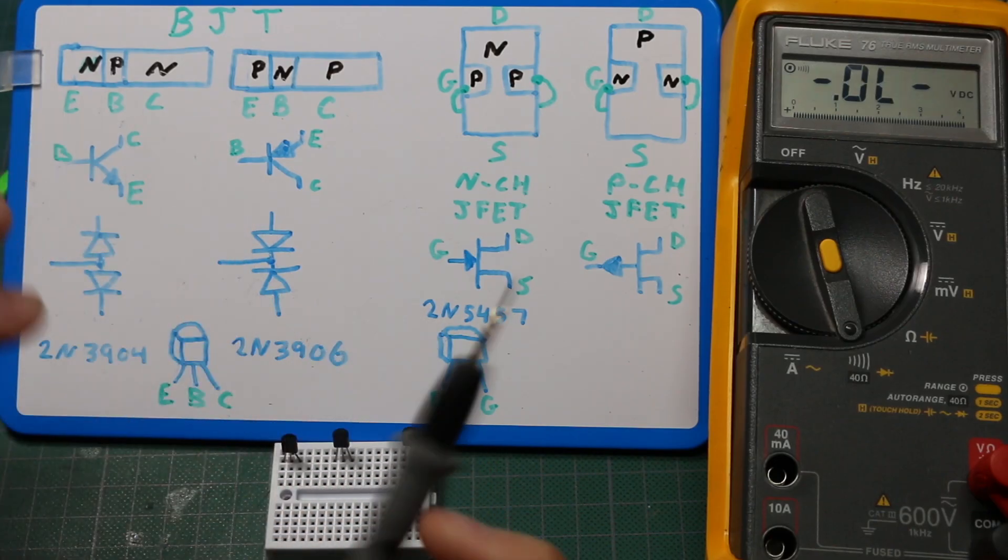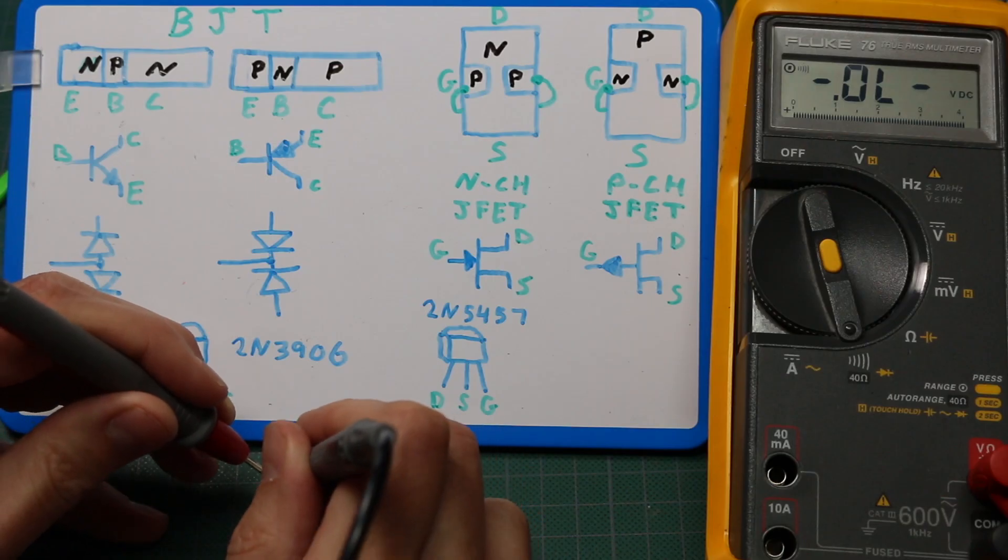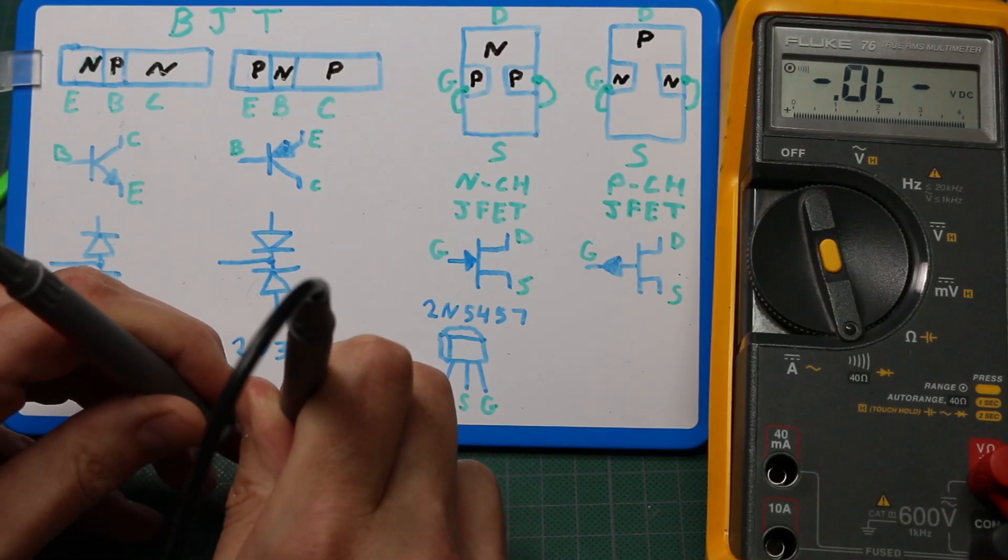If I reverse the leads, I should not see a diode drop. So that's good.